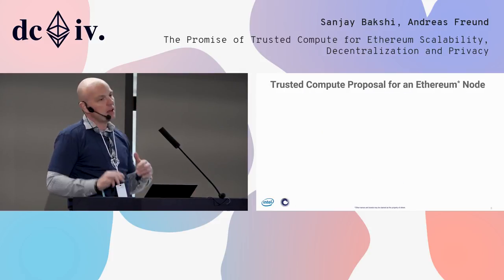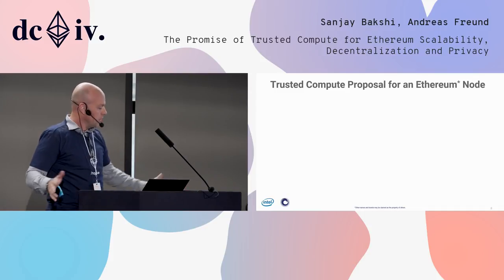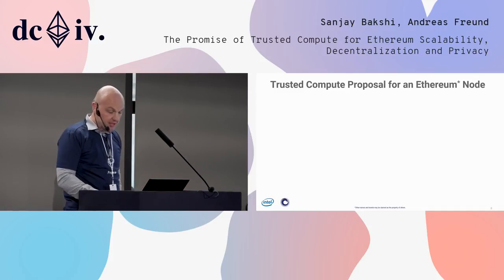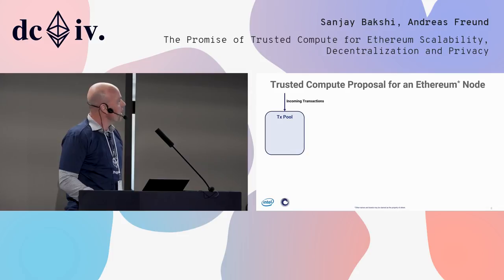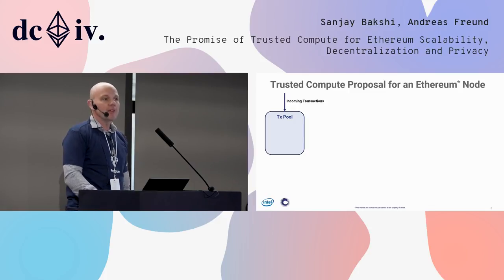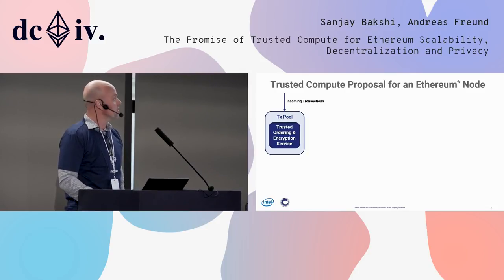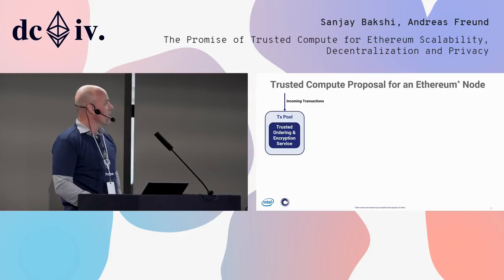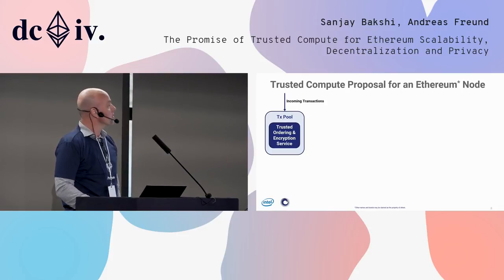Let's come back one step and talk about what we can do on an Ethereum node. Let's do a little journey of an Ethereum transaction. It first comes into the transaction pool. Nowadays, any node can do anything with your transaction — it can do front running, put it into any order it wants, or simply censor it. If you add a trusted ordering and encryption service to that, all of this goes away — you're taking a significant attack vector out.